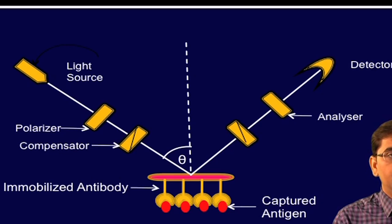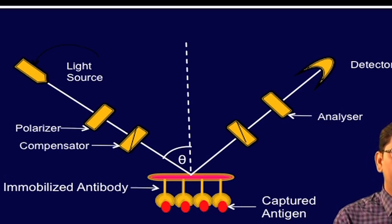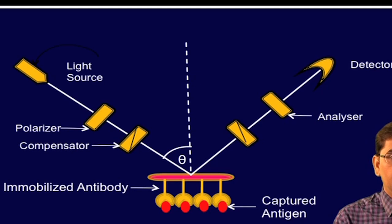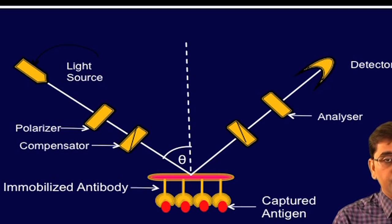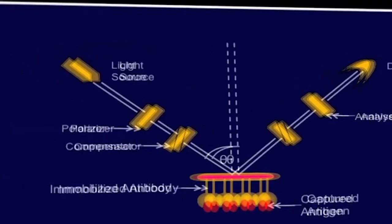A monochromatic laser light, linearly polarized by the polarizer, is passed through a compensator to produce elliptically polarized light. This light is reflected from the sample surface and again becomes linearly polarized, which is detected by an analyzer filter, and this reflected light intensity is monitored with a photo detector.